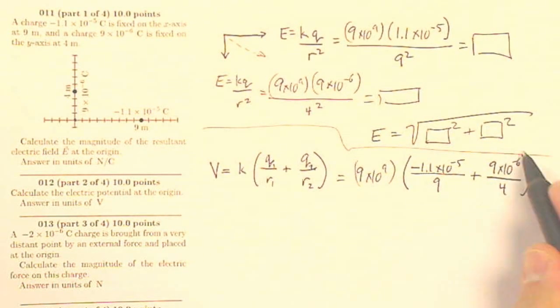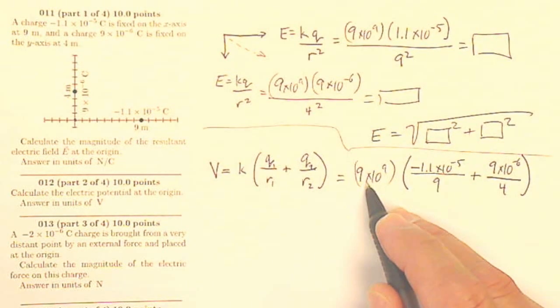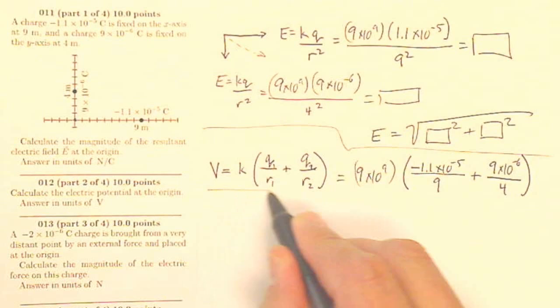So no trig involved, but this is going to be a positive, this is going to be a negative, so it's going to be this minus this, times my K, and that will give me my electric potential at the origin.